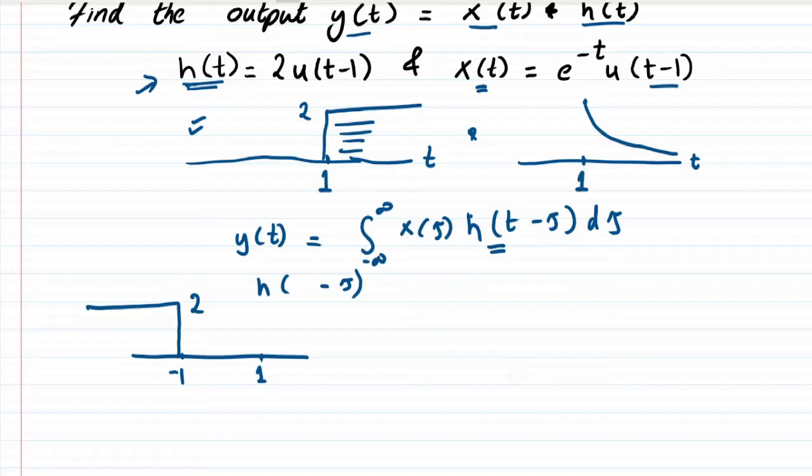But we have a t here, so we are adding with t. This is t minus 1 and then it is going until minus infinity.